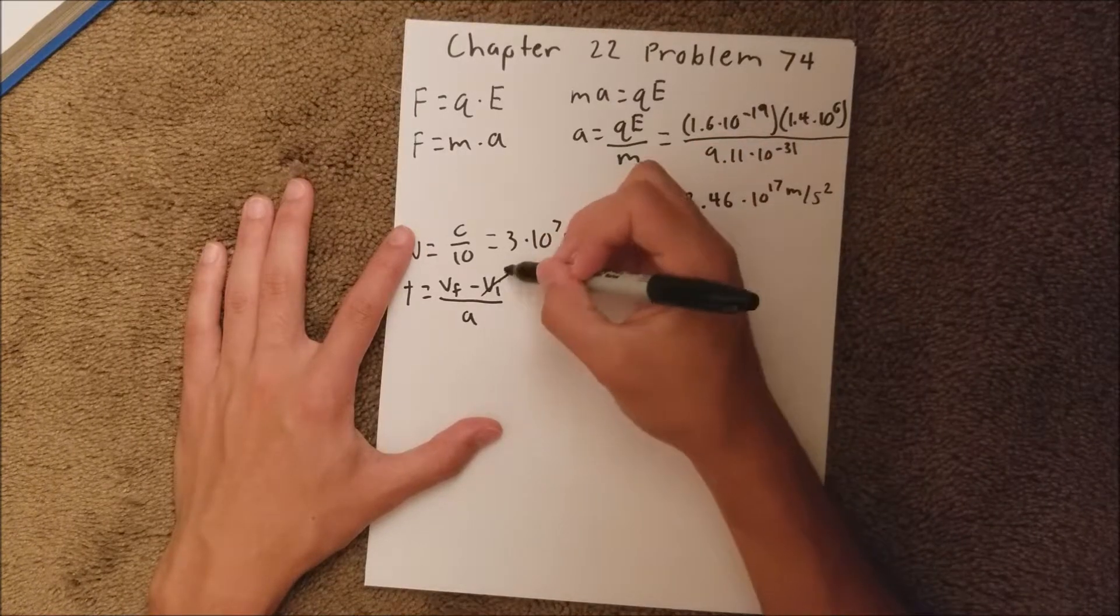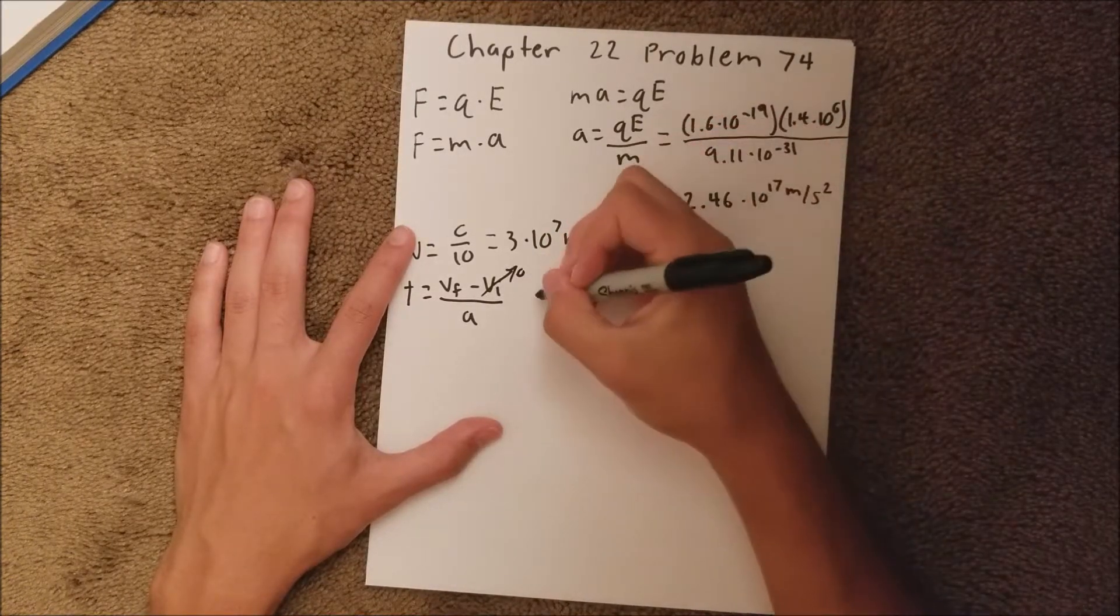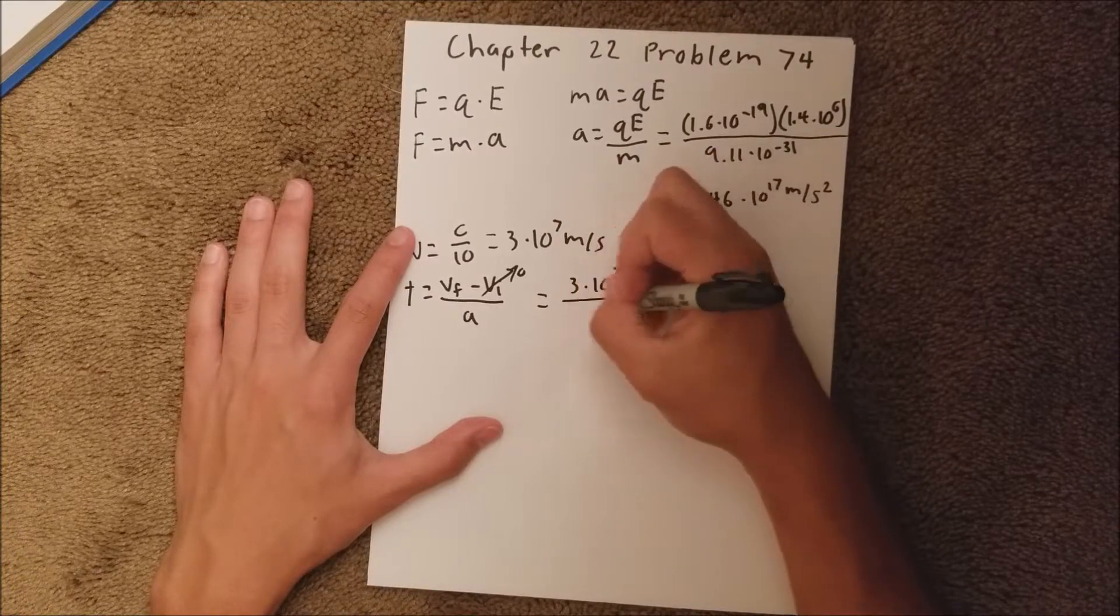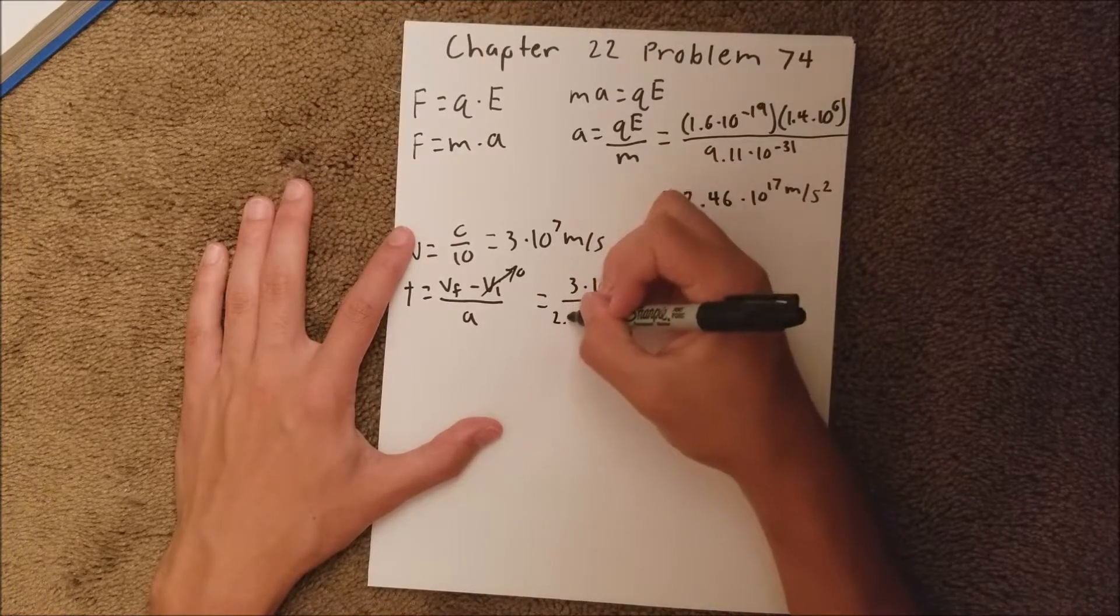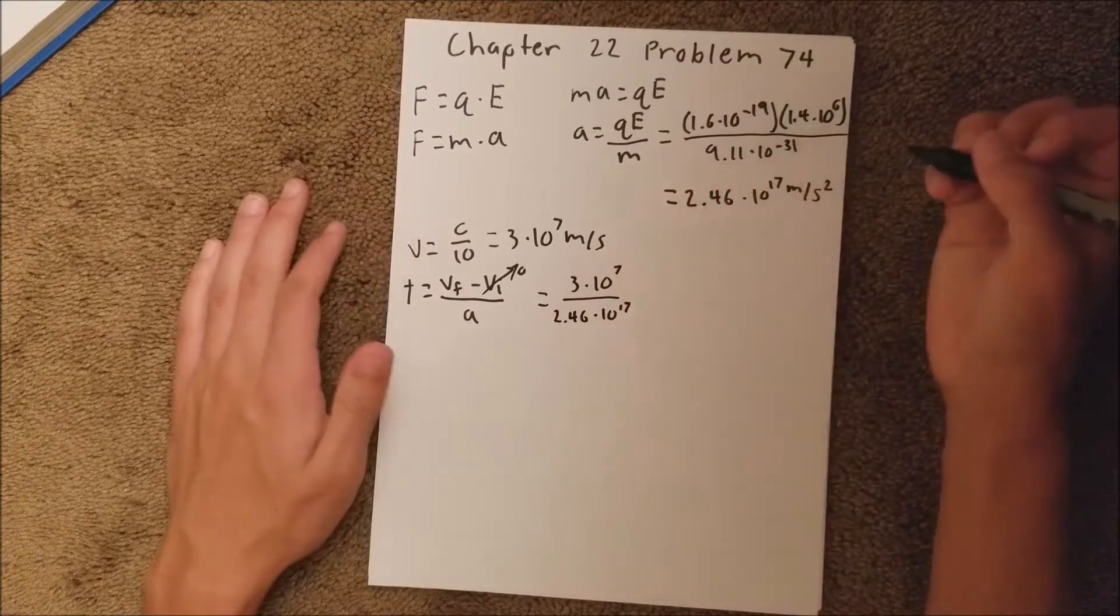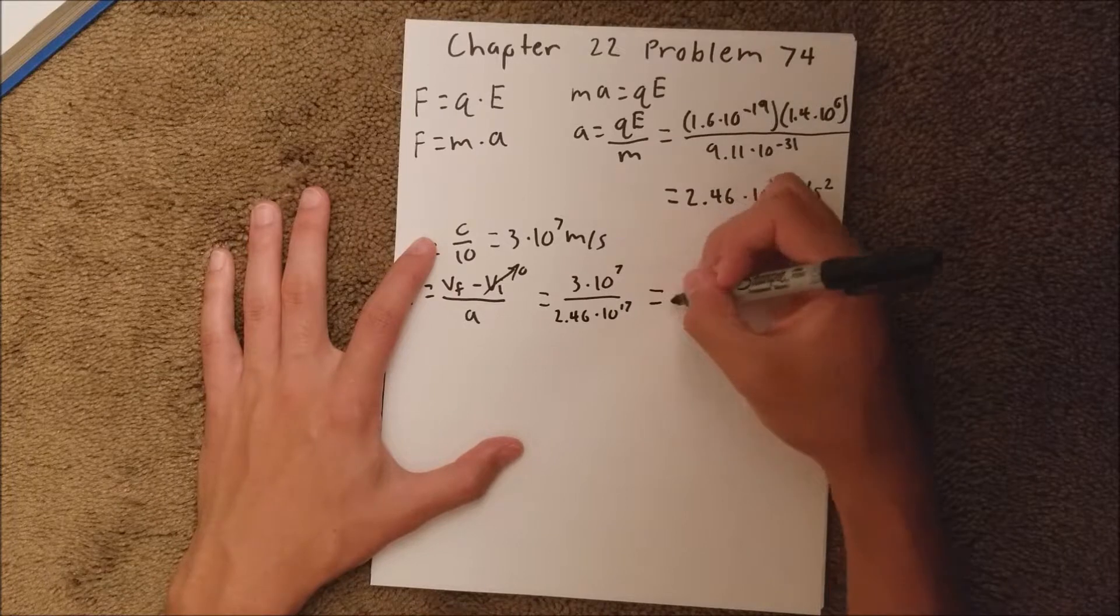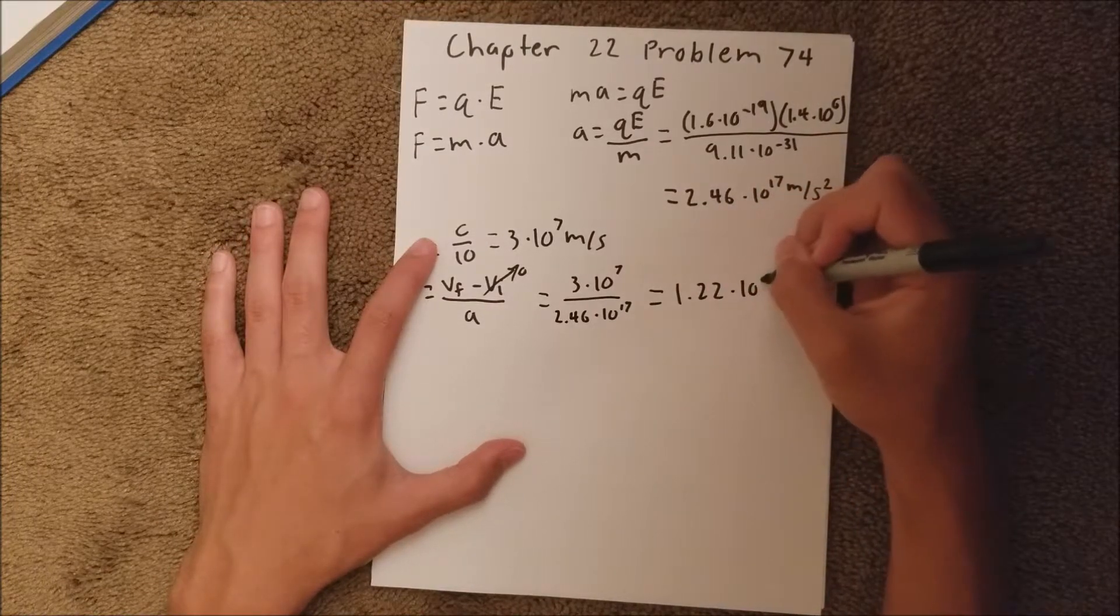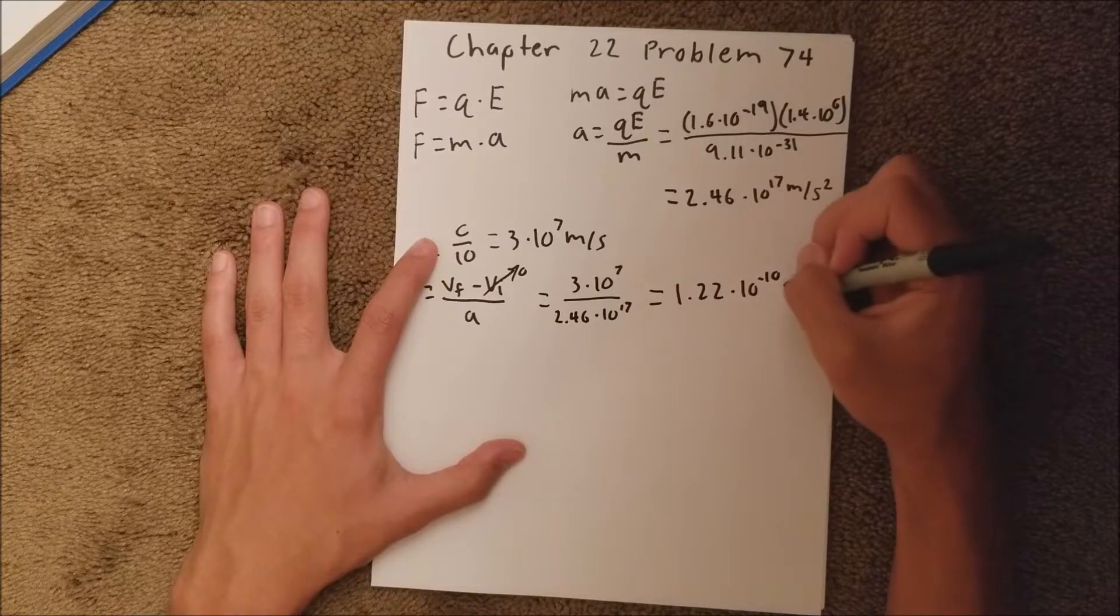is just 0. So this is going to be 3 times 10 to the 7th over 2.46 times 10 to the 17th. And if you plug that into your calculator, you should get 1.22 times 10 to the negative 10th seconds.